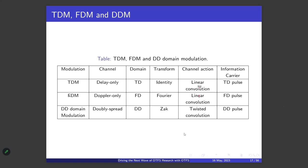This table summarizes how DD domain modulation parallels TDM and FDM: information is embedded in the delay-Doppler domain (vs. time or frequency); ZART transform replaces the Fourier transform; and twisted convolution replaces linear convolution for both channel action and transmitter/receiver processing — preserving predictability and non-fading even in doubly spread channels.